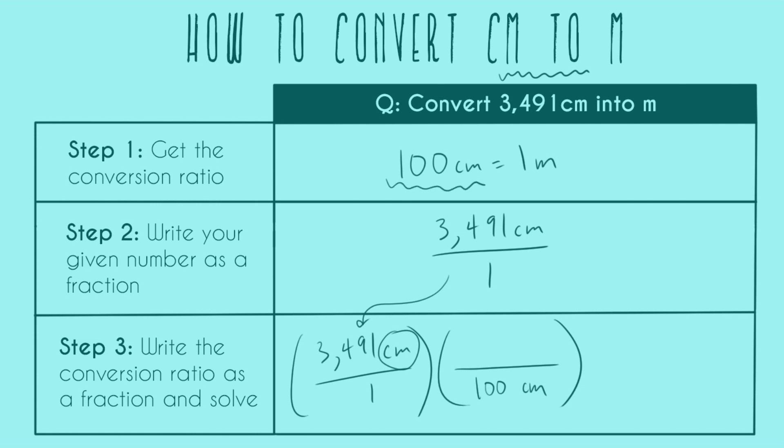We took that straight from the conversion ratio, the left-hand side, in the denominator so we can cancel out. That means the right-hand side, one meter, goes up here. Now we can see that we can cancel out centimeters, which is what we wanted, and we're going to end up in meters, also what we wanted. We can see that our math is to divide 3,491 by 100. So our final answer is 34.91 meters.